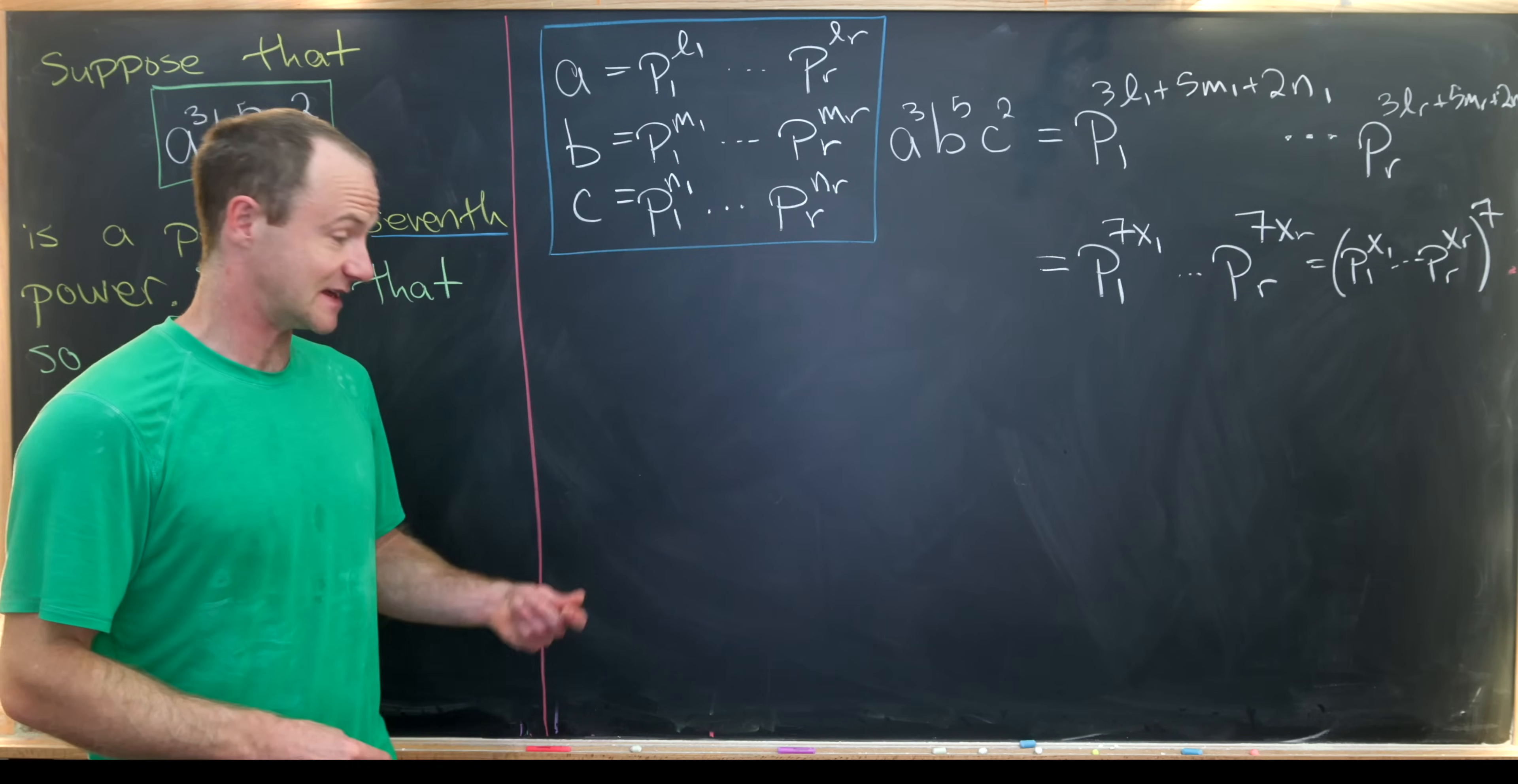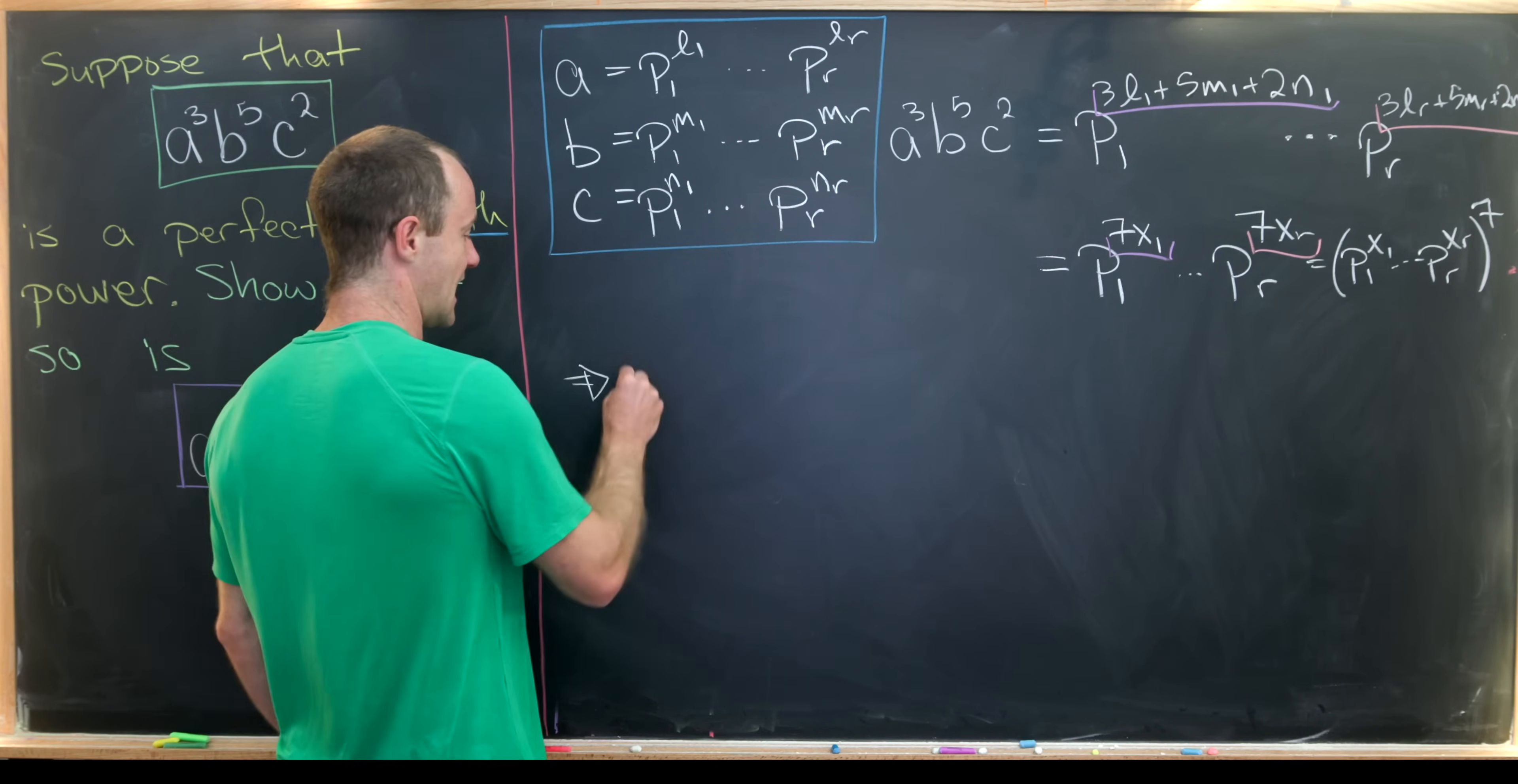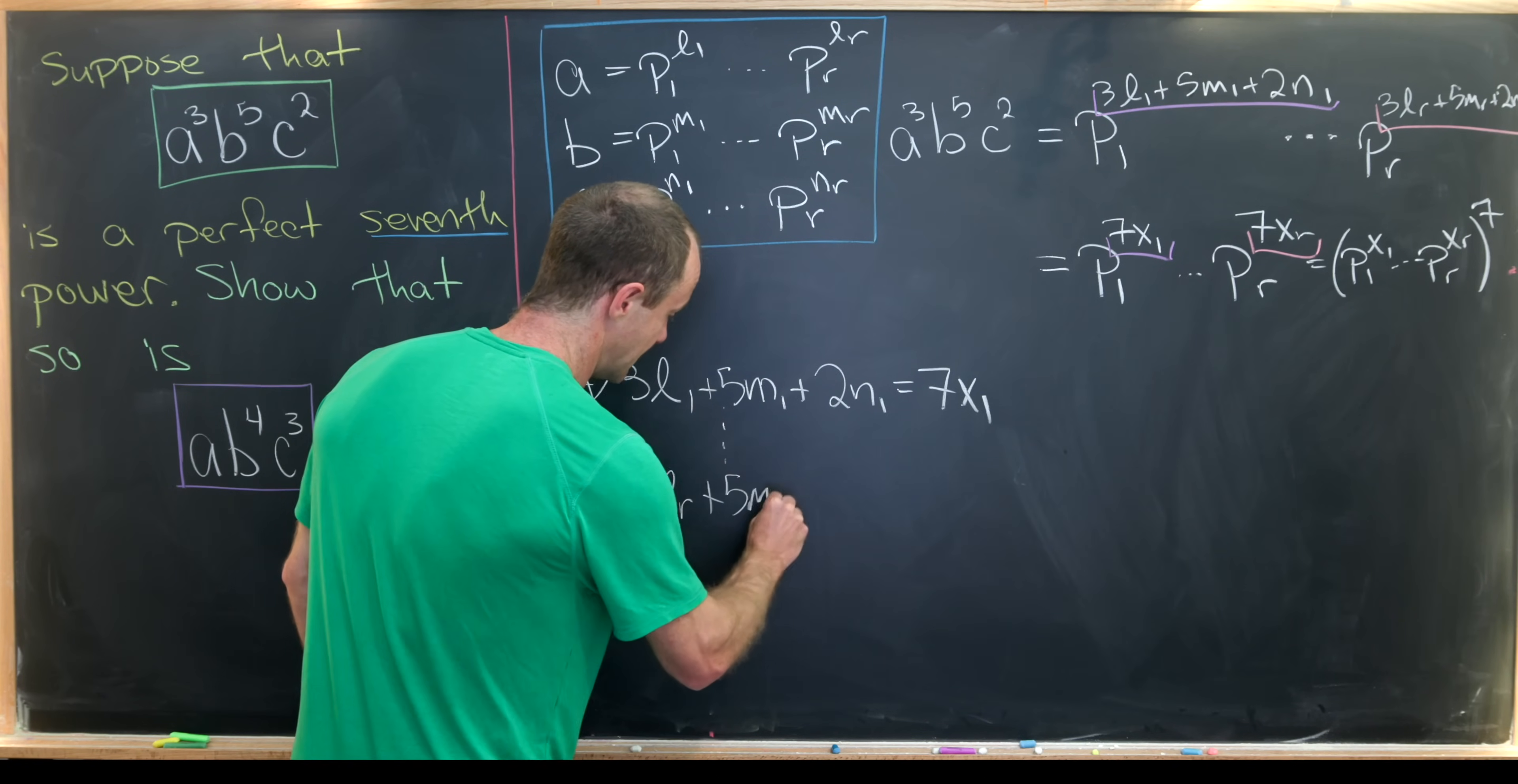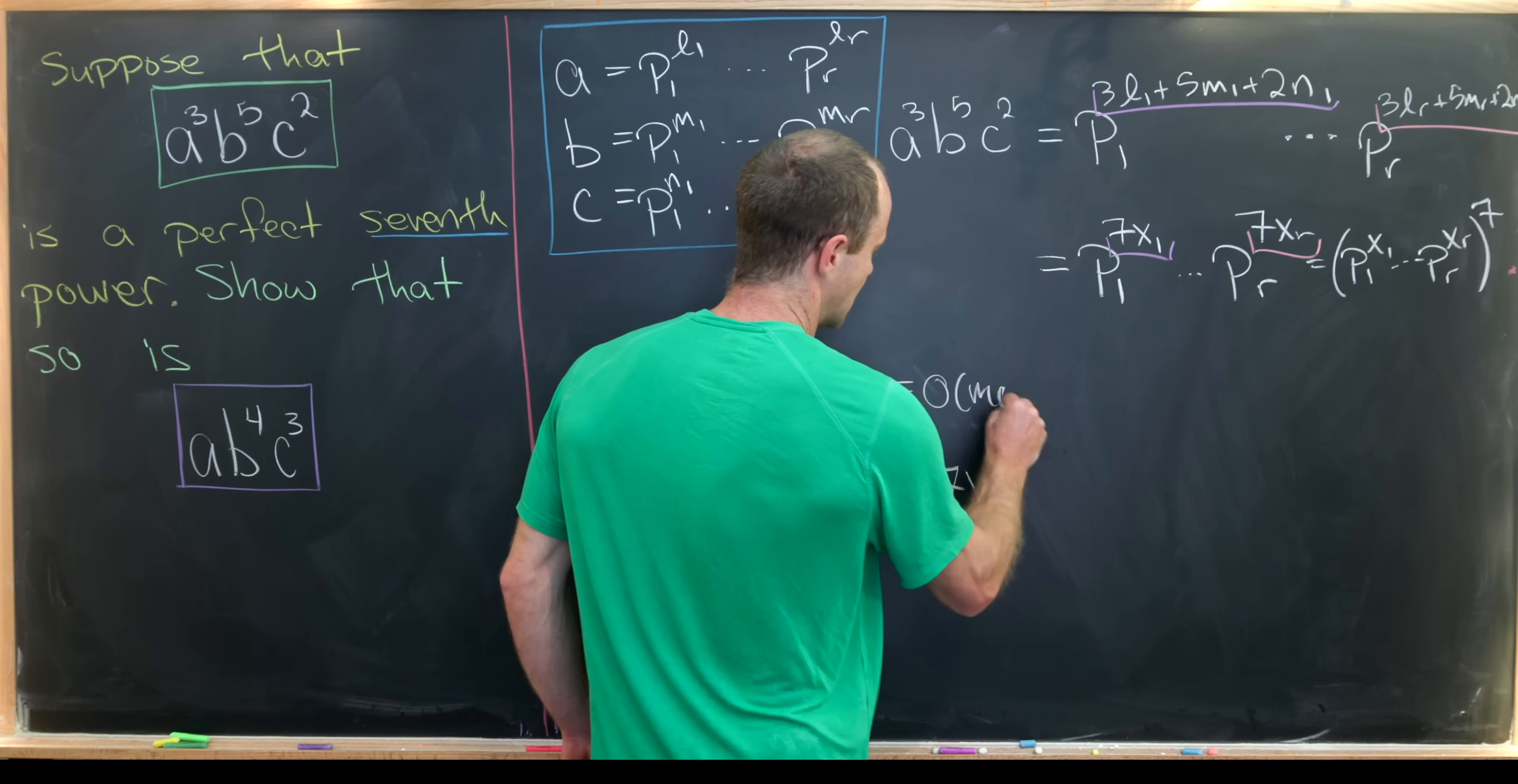But now using the fundamental theorem of arithmetic, again, we can extract all of the exponents from each power of each prime. Since these are unique primes, I didn't really say that here, but that's kind of like in the undercurrent of this whole solution. So that tells us that we have 3l1 plus 5m1 plus 2n1 is equal to 7x1, all the way down to the last one, which is 3lr plus 5mr plus 2nr is equal to 7xr. Okay, but now we're going to reduce this modulo 7. So if this is a multiple of 7, that means we know it's congruent to 0 mod 7. So let's say this is congruent to 0 modulo 7.